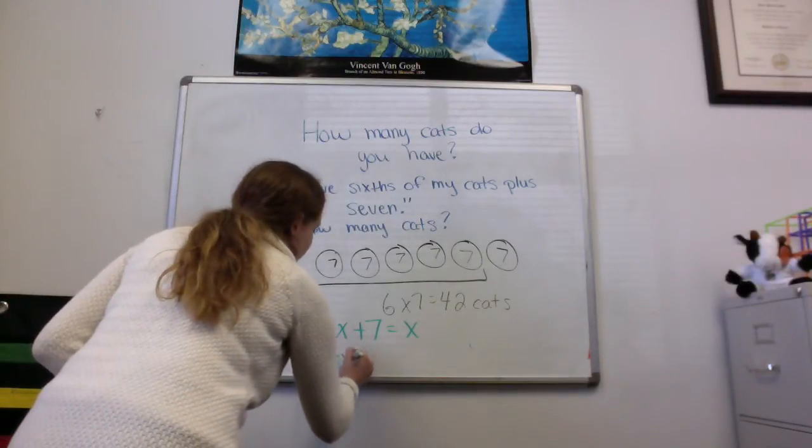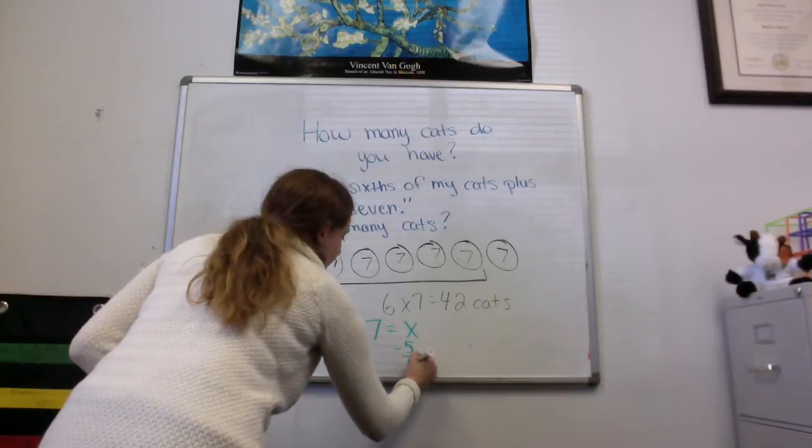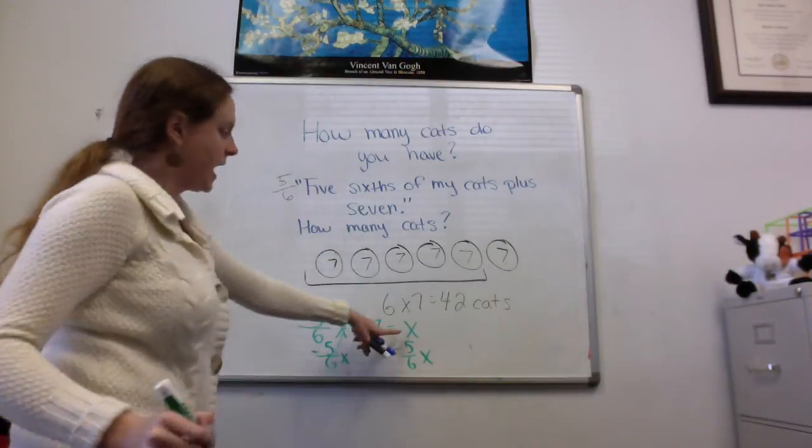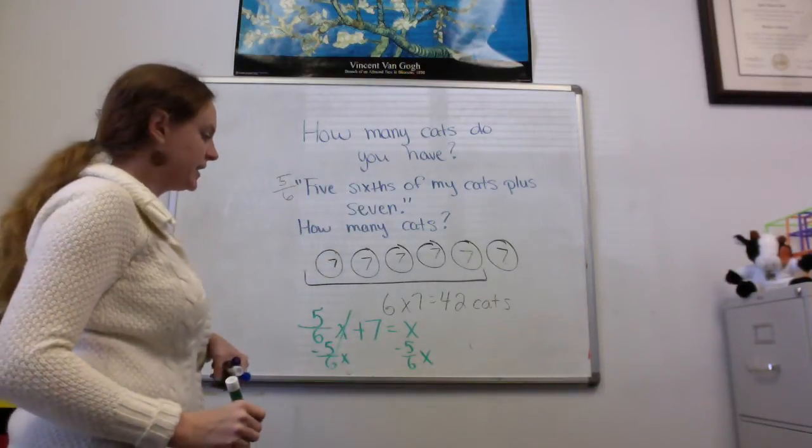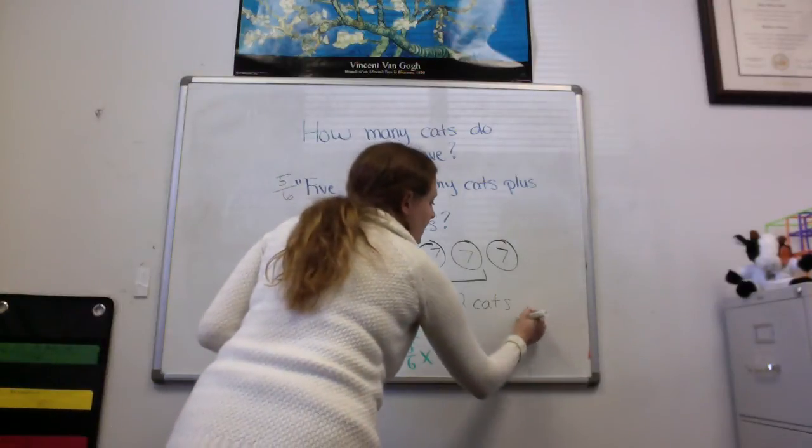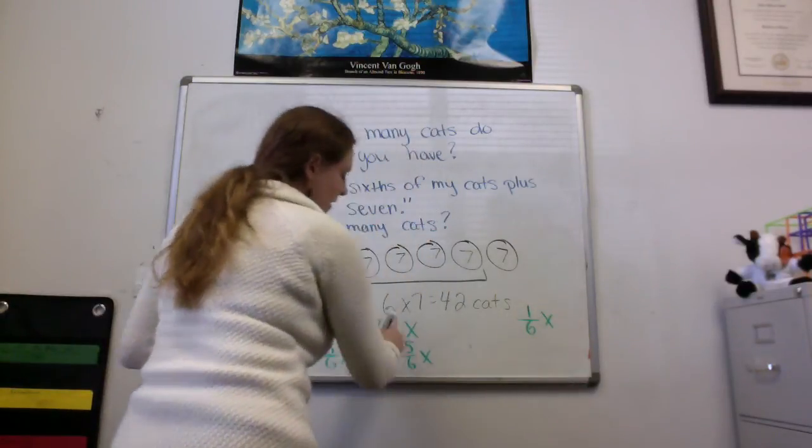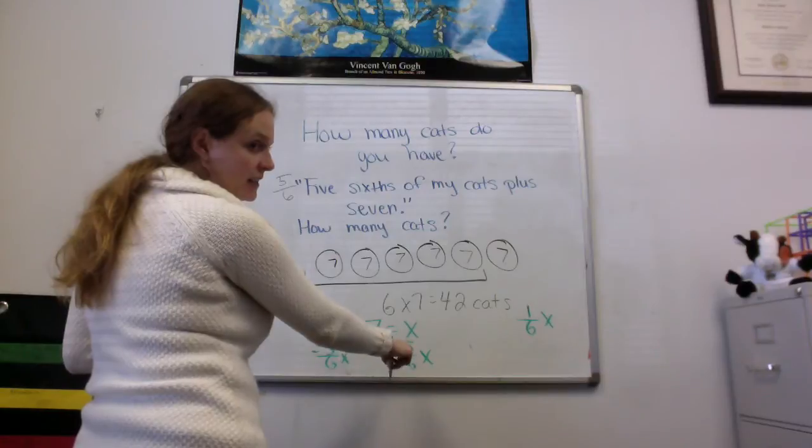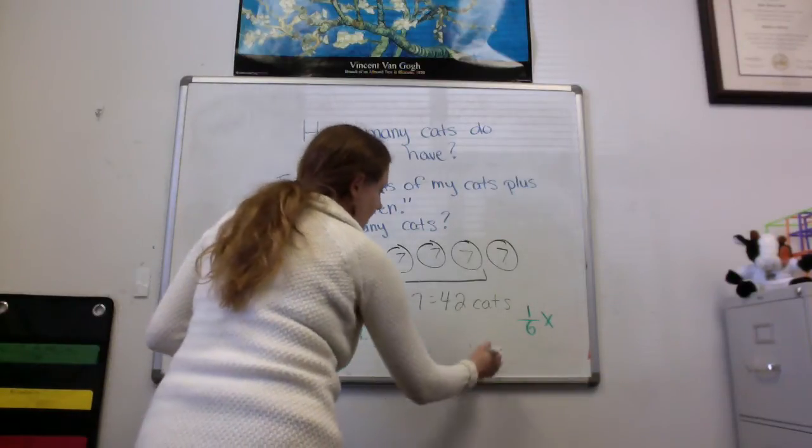So I'm going to subtract 5/6x. x minus 5/6x is 1/6x. There's an invisible 1 there. That's 1x minus 5/6 gives me 1/6.